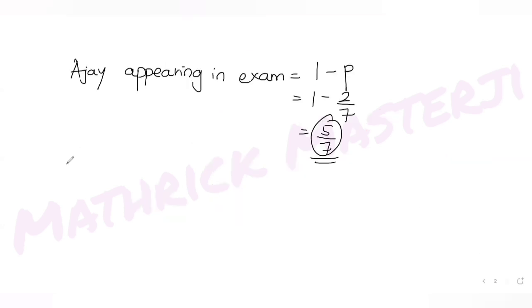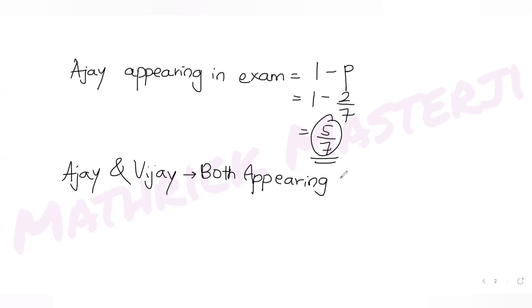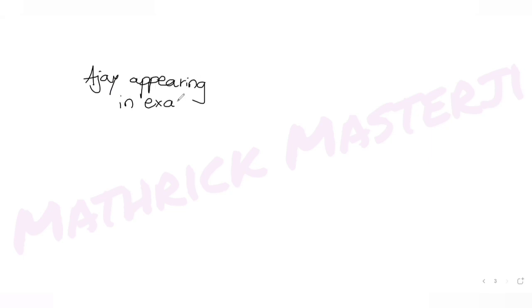Ajay and Vijay both appearing in the exam has probability 1/5. Now, the event that Ajay appears in the exam can be split into two cases: one where Ajay appears and Vijay also appears with him for the exam.